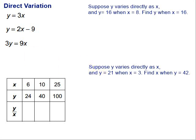Let's take a look at direct variation. Direct variation is a special type of linear equation that is in the form y equals kx, and we call that k the constant of variation.